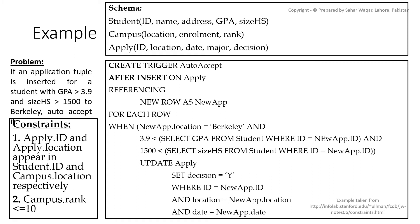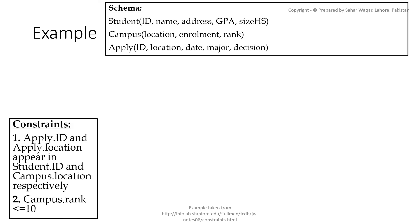The trigger name is auto_accept and the event is INSERT on the Apply table. We reference the new tuple as new_applicant and use FOR EACH ROW. The condition checks that the student applied to Berkeley, has GPA greater than 3.9, and high school size greater than 1500 — with GPA and high school size extracted from the Student table using the applicant id. If these three conditions are true, we update the Apply table, setting the decision to 'Y' for the matching student id, location, and date.